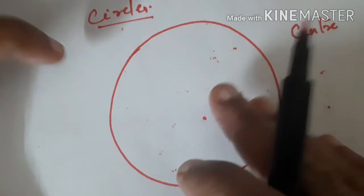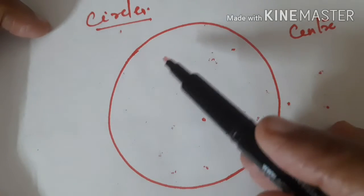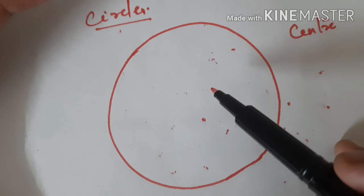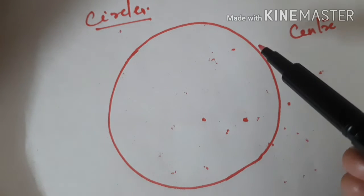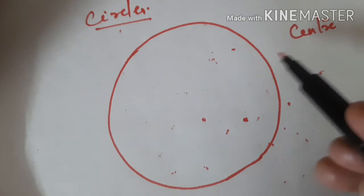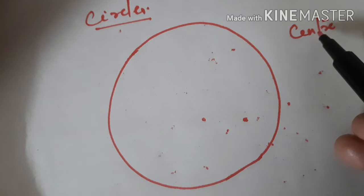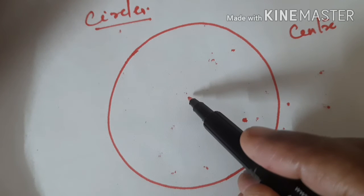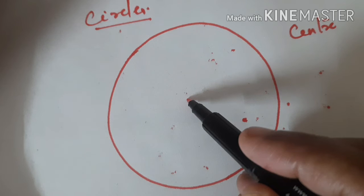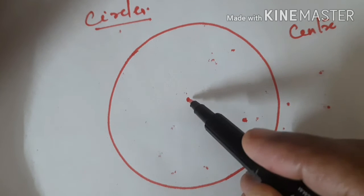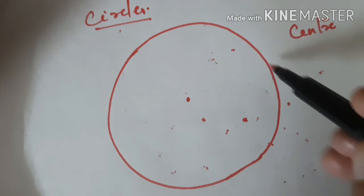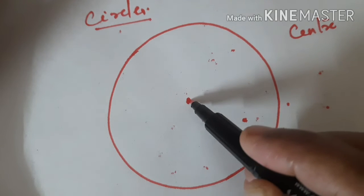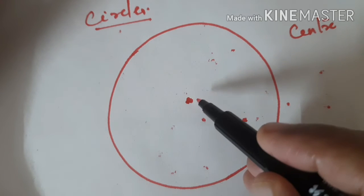Now next is the circle. You know how to draw a circle using a compass and pencil. Today we study the parts of the circle. First is the center. When you draw using the compass, you keep the needle at a point and with a particular radius you draw the circle — that fixed point is the center of the circle.